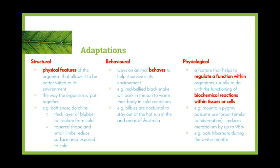Behavioural adaptations are ways that an organism behaves in order to help it survive in its environment. An example of an ectotherm behavioural adaptation is the red-bellied black snake, which will bask in the sun to warm its body when it's cold. We see this a lot during winter — driving along the road, you'll see lizards and snakes lying on the side trying to warm themselves up.